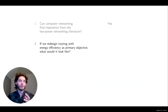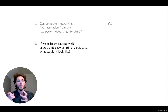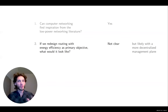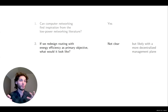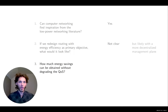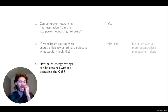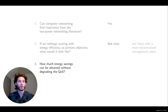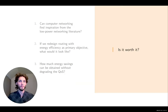If we were to take that idea and redesign routing protocols with energy efficiency as the prime objective, how would that look? Most likely we would want a more decentralized management plane where nodes can learn when they should turn on and off. The key question is: how well does that work? How much of the potential energy savings could we gain without degrading too much the QoS — in particular the latency provided by the network? That clearly needs more research.